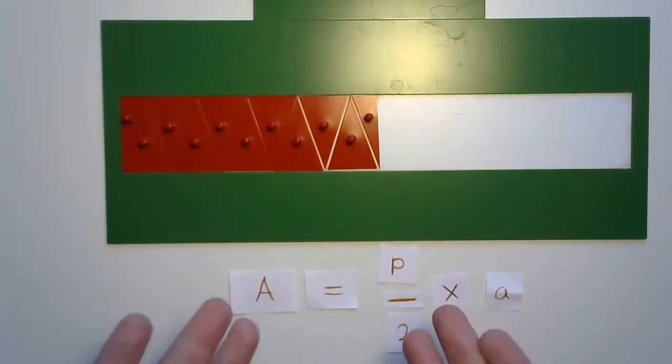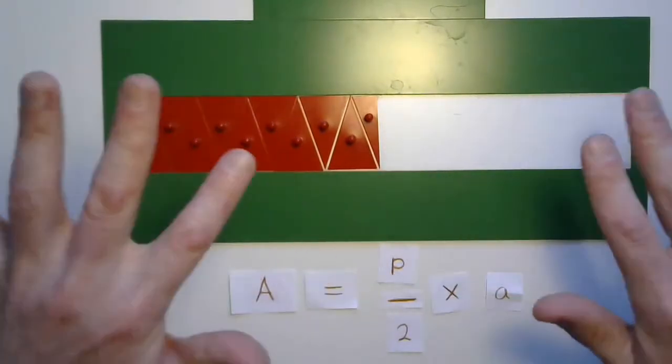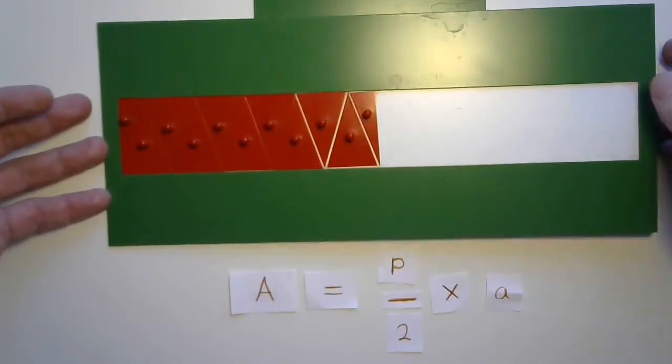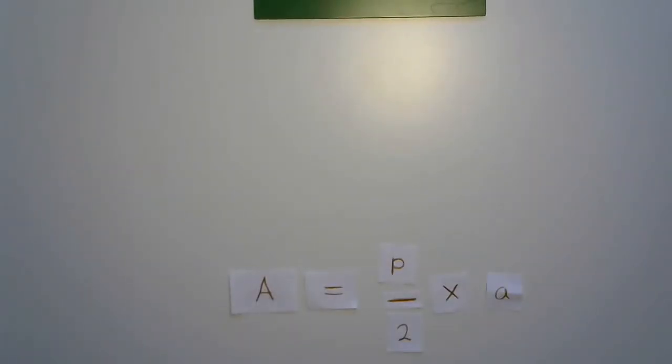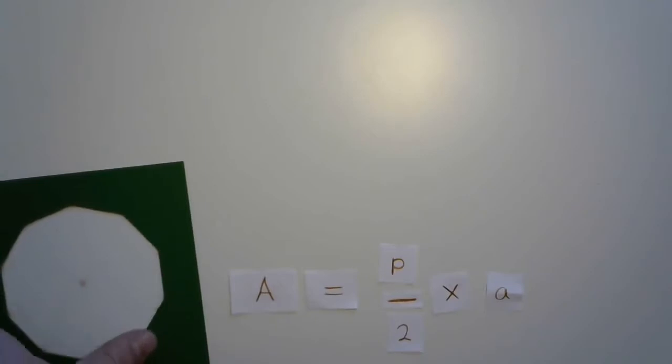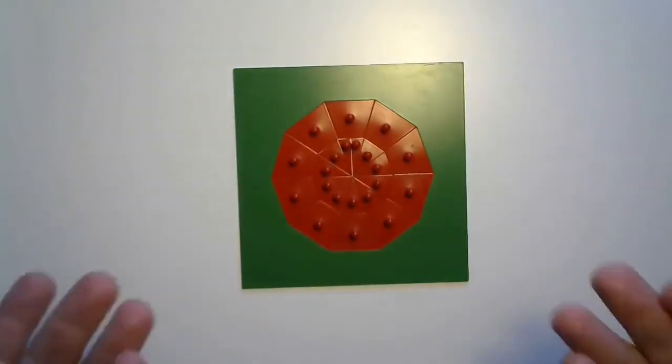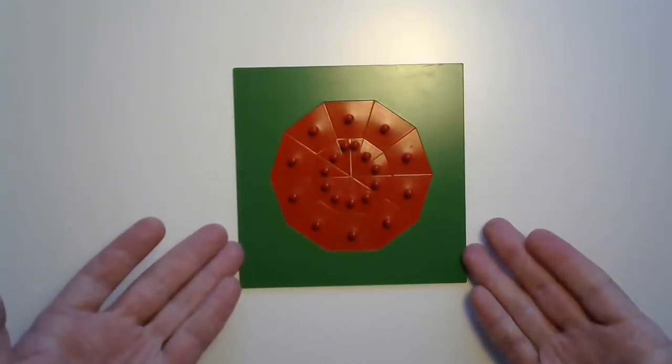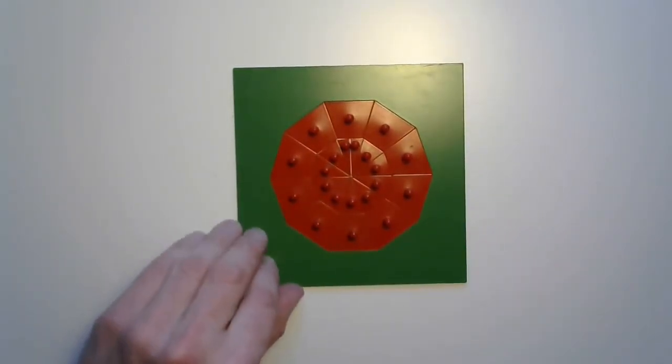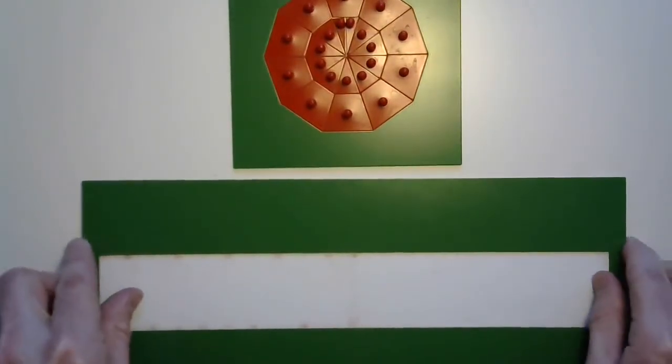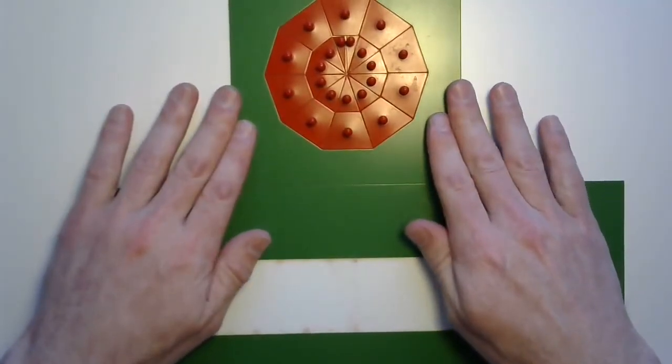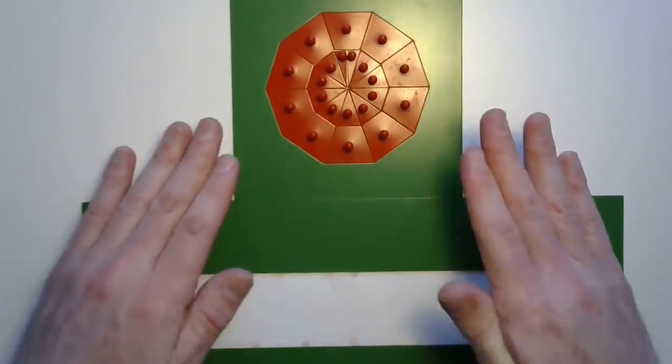But maybe you don't believe me yet. Maybe you want to see something even crazier. So to do that, we'll need another decagon. Here's another decagon. Now this one looks very interesting. Okay. This time, we're going to label those parts first, make the transformation, and then assess.